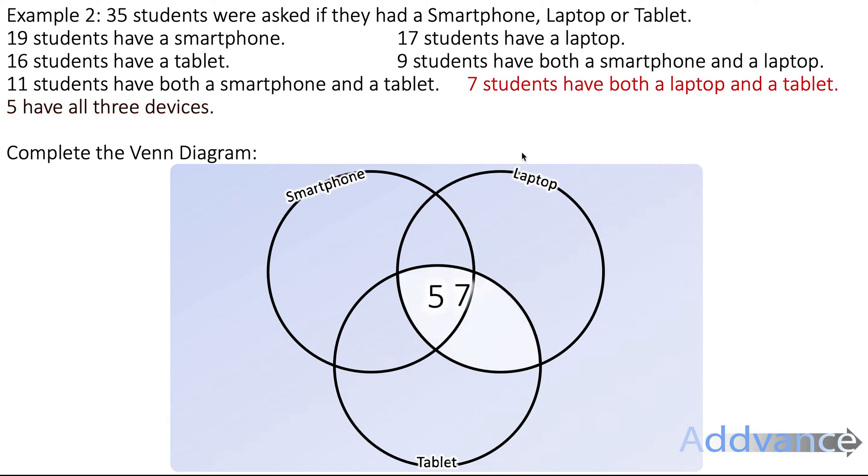Now it says that 7 students have both a laptop and a tablet. But we also know that 5 students have all 3. So therefore these two, these two white bits here, where tablet and laptop overlap, must be 7. So therefore the missing number between 5 and this missing number must be 2. 2 to make 7. Because the overlap is 7.